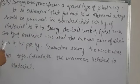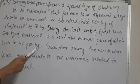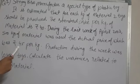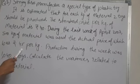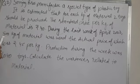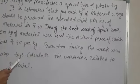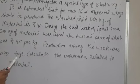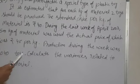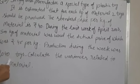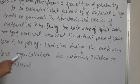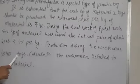The actual price was Rs. 45 per kilogram, this is the actual price AP. And actual quantity is 500 kilograms. Production during the week was 1040 toys. Calculate the variances related to material. We can use 1040 toys for the calculation of standard quantity.